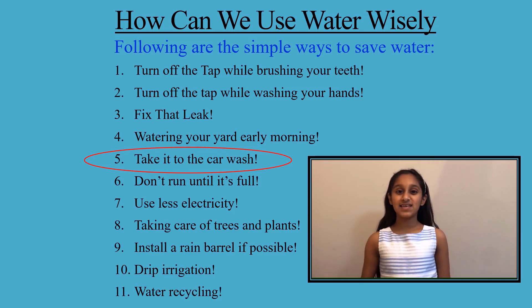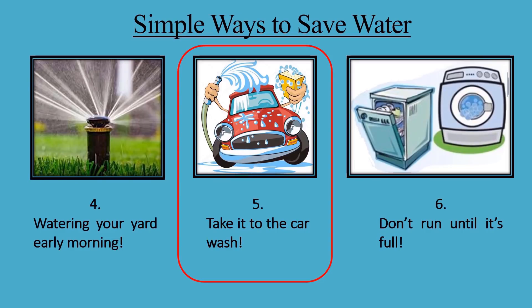Number five: take it to the car wash. Washing your bike or car with a bucket and sponge instead of a hose saves lots of water. A hose can waste up to six gallons of water per minute if left running, but using a bucket and sponge only uses a few gallons. Some car washes recycle water instead of letting it run down the drain. If you want to wash your car, take it to a car wash that recycles water rather than washing it at home with a hose.